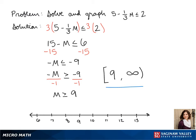To graph this, we have to draw a closed circle at 9 because it's included in the interval. And it's anything greater, so our arrow goes to the right.